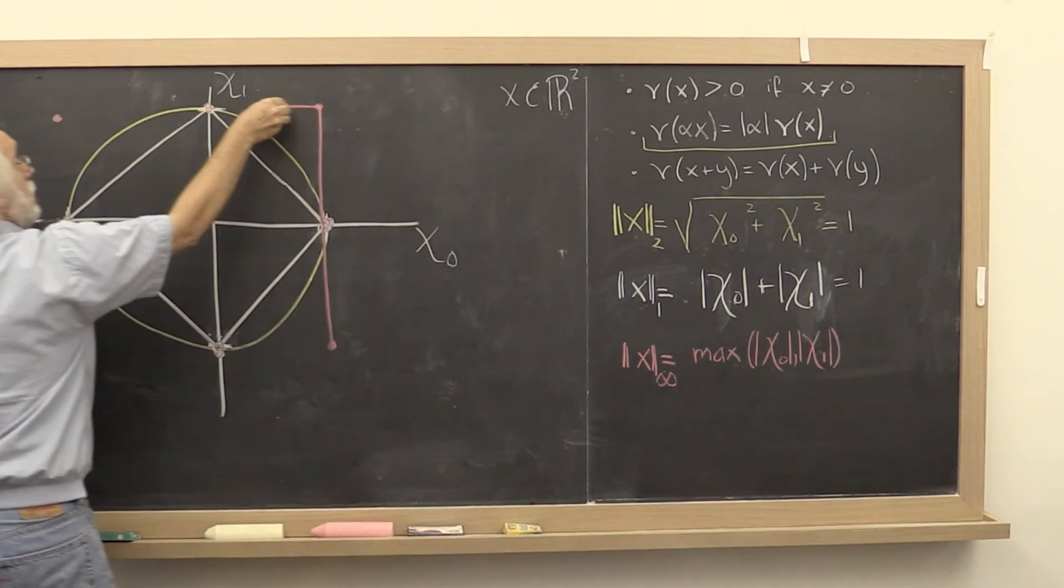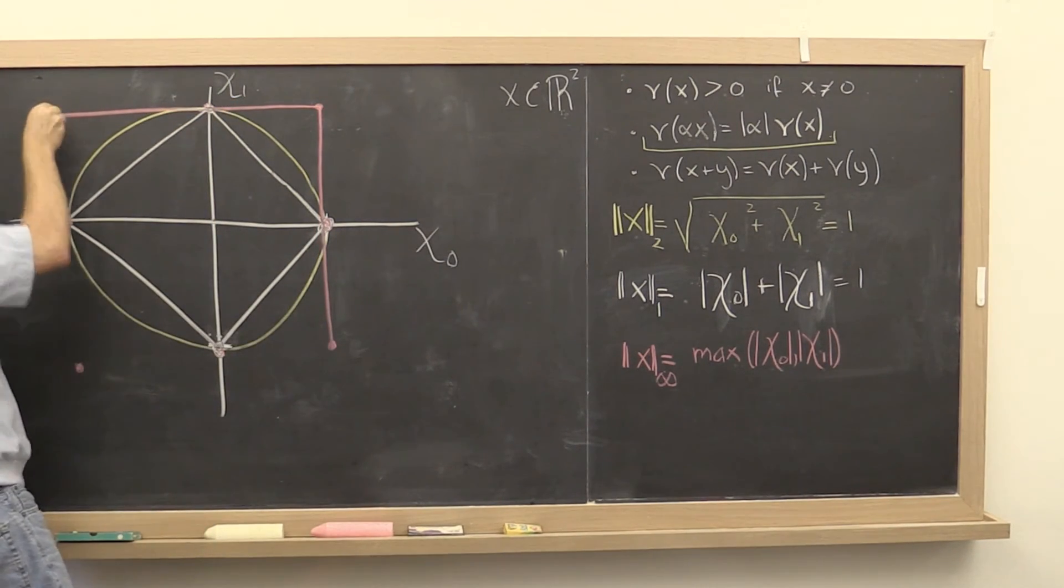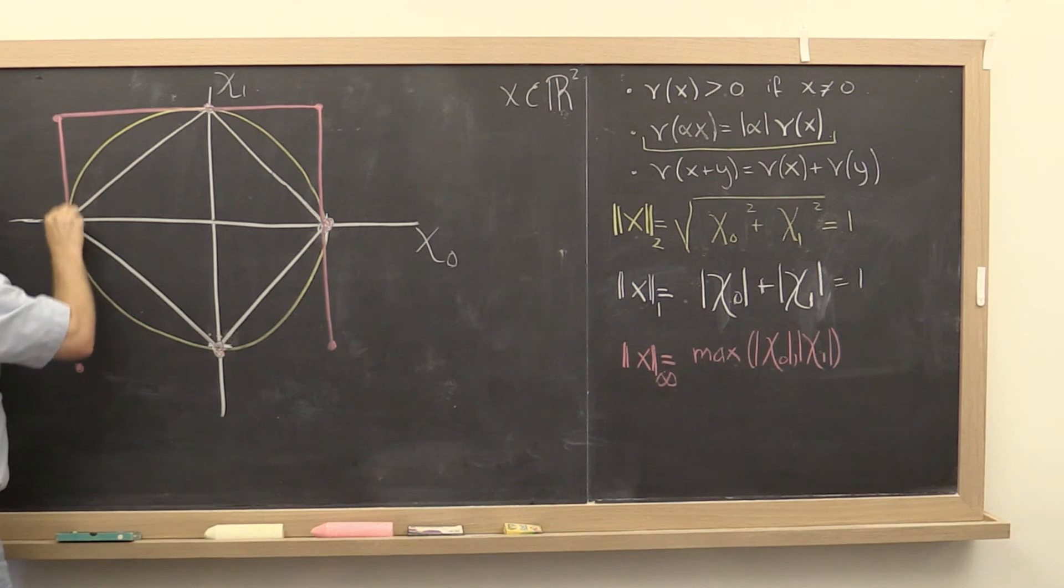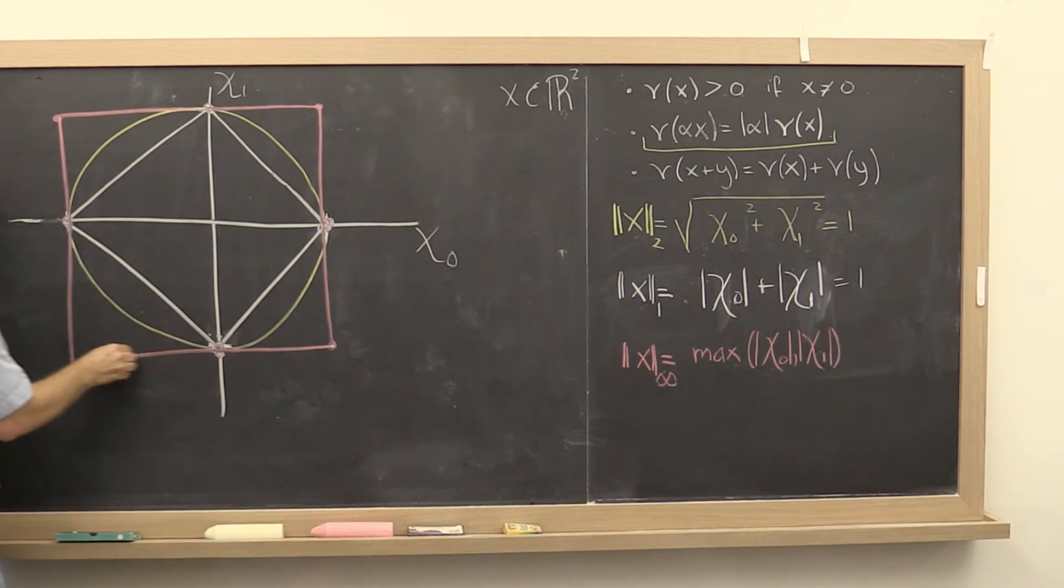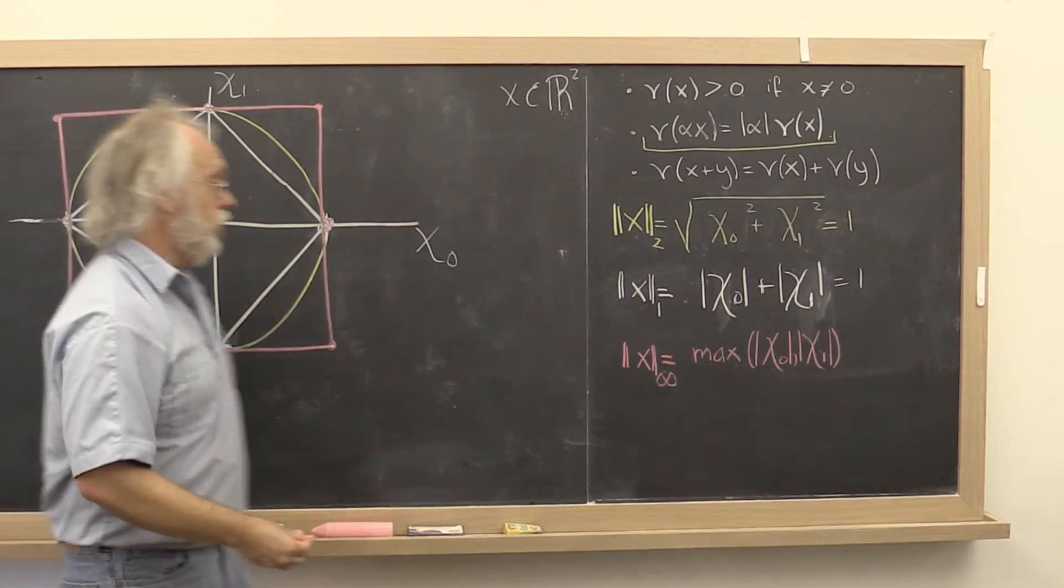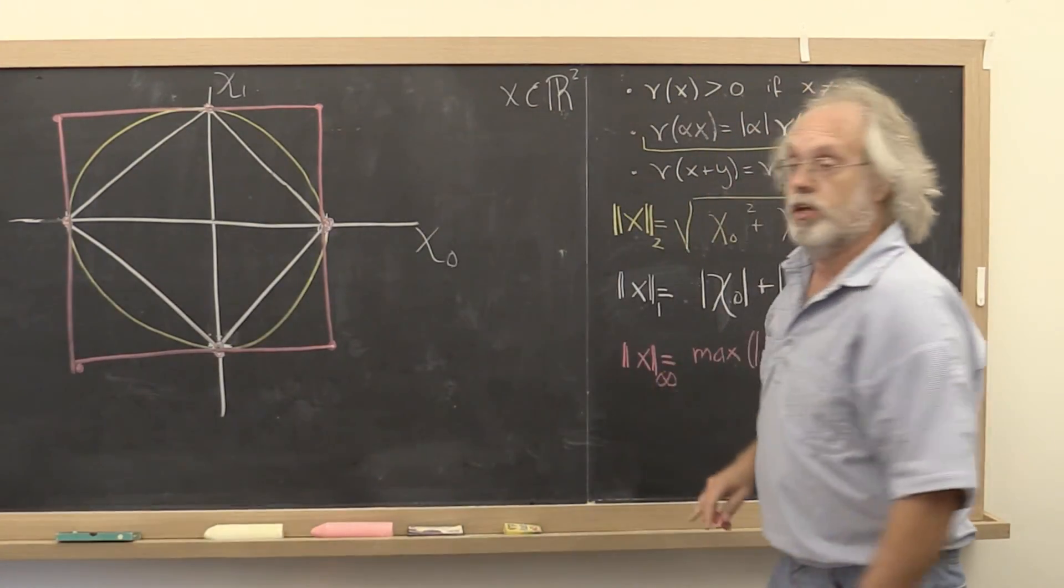And so are all of these points and these points. So there is the unit ball for the infinity norm.